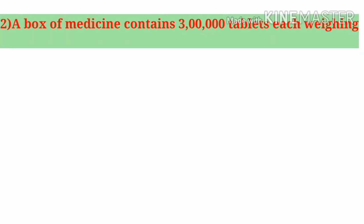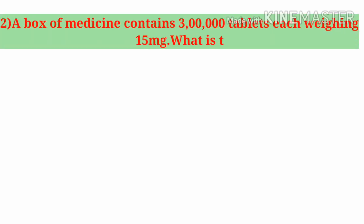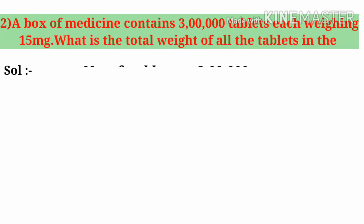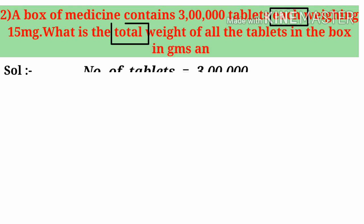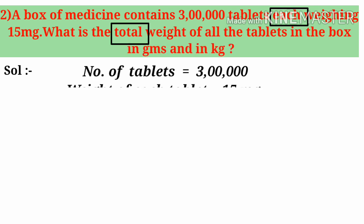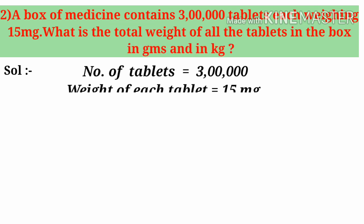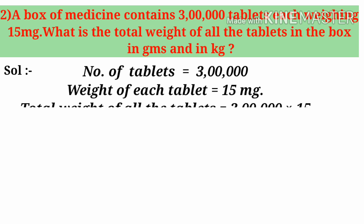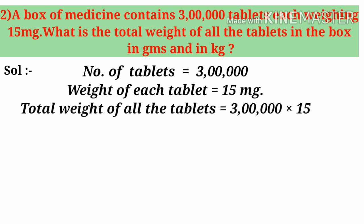Now let us do the second problem. A box of medicine contains 3 lakh tablets, each weighing 15 grams. What is the total weight of all the tablets in the box in grams and in kilograms? Find the words 'each' and 'total' in the problem, so let us do multiplication. Number of tablets: 3 lakhs. Weight of each tablet: 15 grams.